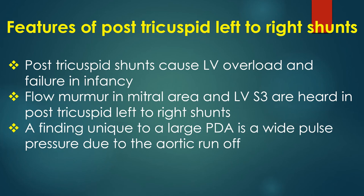Post-tricuspid shunts cause left ventricular overload and failure in infancy. Flow murmur in the mitral area and left ventricular third heart sound are heard in post-tricuspid left to right shunts. A finding unique to a large PDA is a wide pulse pressure due to aortic runoff.